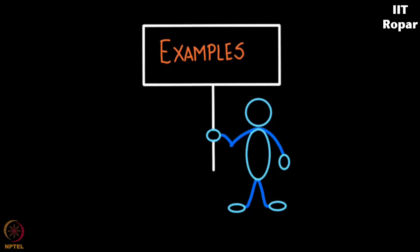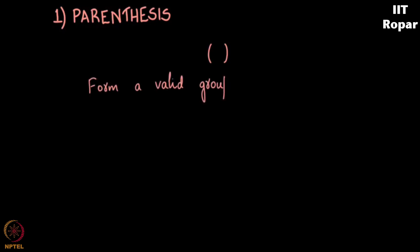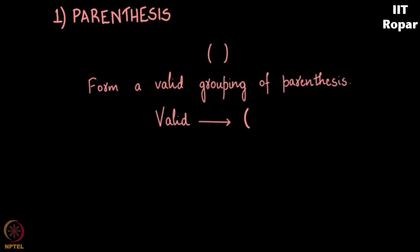The first example is parentheses. These are called parentheses. We will be given n pairs of parentheses and we would like to form a valid grouping of them. Valid grouping means for every open parenthesis there must be a closed parenthesis.